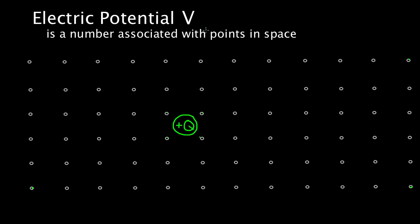Why do we care? The reason we care is this: the units of electric potential are joules per coulomb. That gives you a hint of why you should care — joules are energy. So if something can have energy, that's useful; you can get work out of that or it can turn into kinetic energy. Joules per coulomb lets you know, all right, if this point over here happened to have, say, 100 joules per coulomb — let's say the V value at this point in space happened to be 100 joules per coulomb.